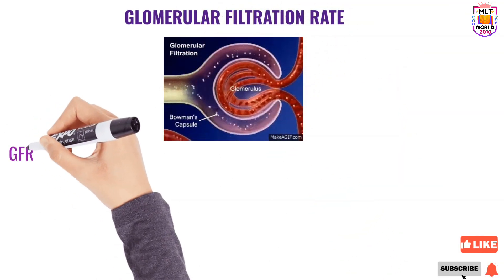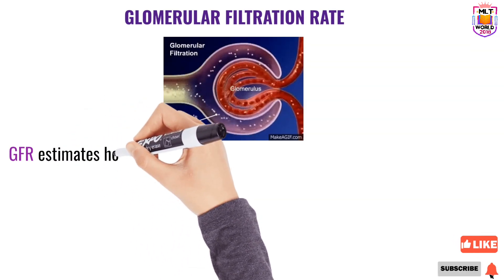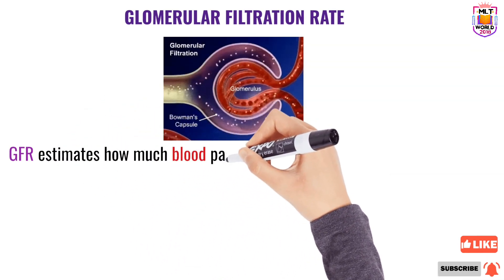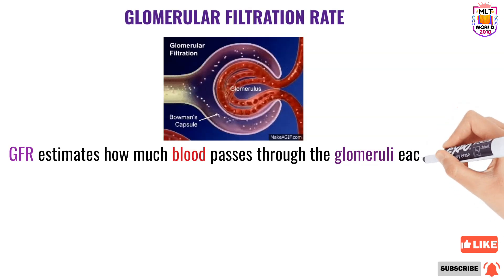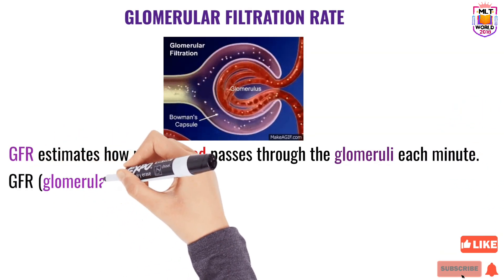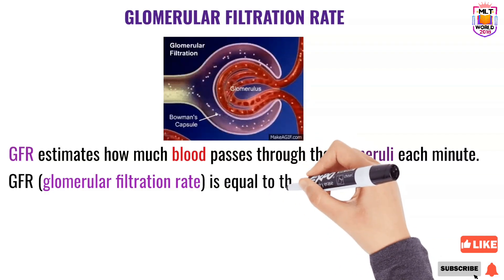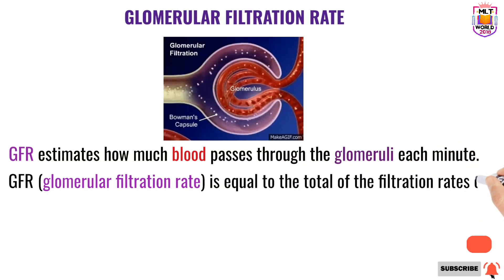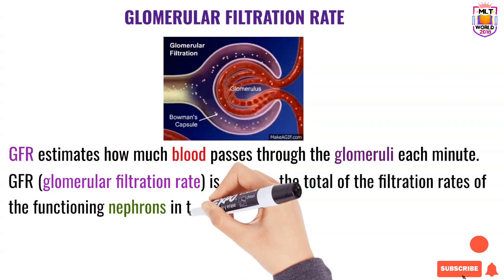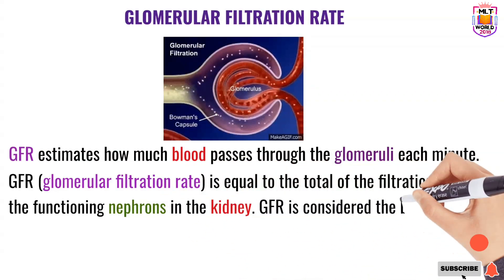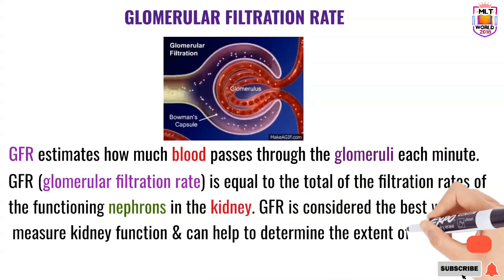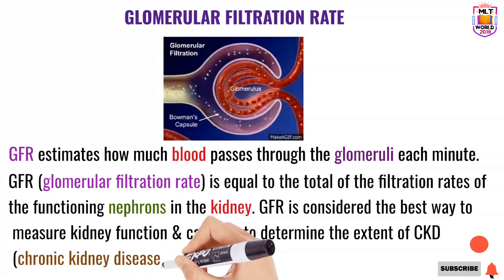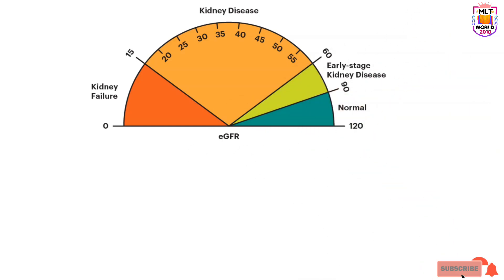So, what is the glomerular filtration rate? The glomerulus is the starting part of the nephron where blood enters. Glomerular filtration rate estimates how much blood passes through the glomerulus each minute. GFR equals the filtration rate of the functioning nephrons in the kidney. GFR is the best way to measure kidney function and helps determine the extent or level of CKD, chronic kidney disease.